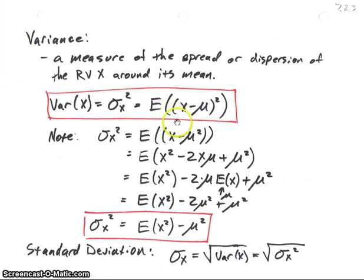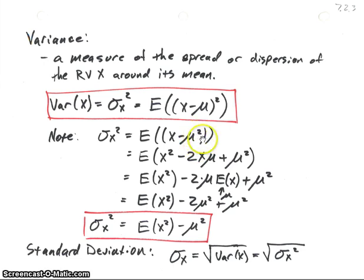Sigma sub x squared is our variance, and that'll be equal to the expected value of the quantity x minus its mean, squared. So that's the definition. From that definition, we can come up with a different version. We're going to multiply the square out: x squared minus 2 times x times mu plus mu squared — just squaring that factor.